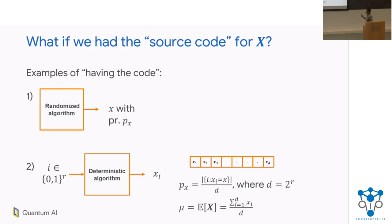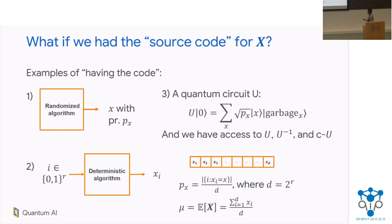Our algorithms actually work with an even more general quantum model, where you have some quantum circuit U, and on some canonical starting state — say the all-zero state — the quantum circuit outputs a quantum superposition over different X's with the correct amplitude. The amplitude is the square root of the probability so that when you make a computational basis measurement, you get the correct probability. There may be some garbage, because in general when you convert a classical algorithm to a quantum algorithm you will get some garbage. When we say we have access to the quantum circuit U, we assume we have access to the circuit and its inverse and controlled versions. If you had a deterministic algorithm for computing X's, you can construct a quantum circuit with the same gate complexity and its inverse and controlled versions.